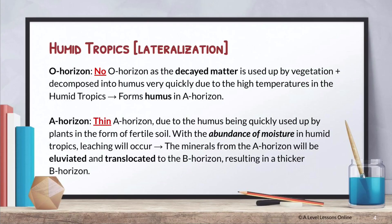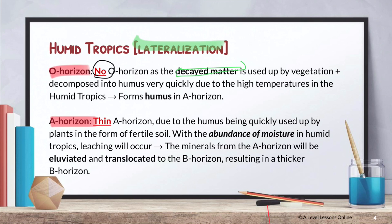In the humid tropics, the process is lateralization. You explain this topic based on the different horizons: O, A, B, C, and R — where R is your unweathered material. For the O horizon in the humid tropics, there is actually no O horizon, because the decayed matter is used up by all your flora and fauna. It also decomposes very quickly to form humus, which then forms humus in the A horizon.